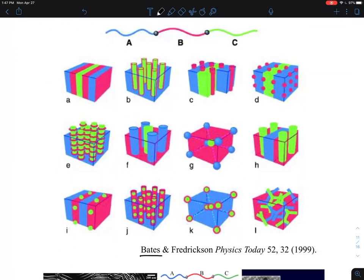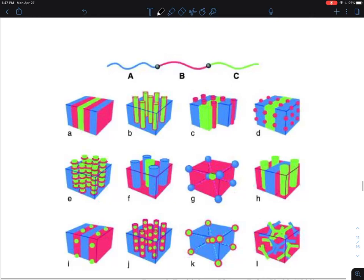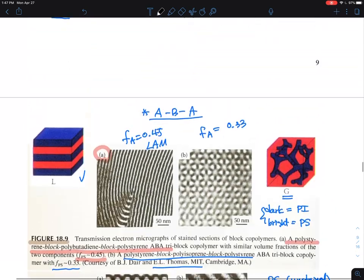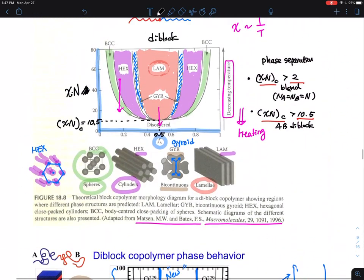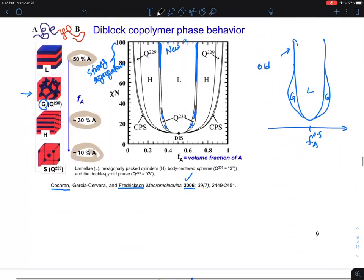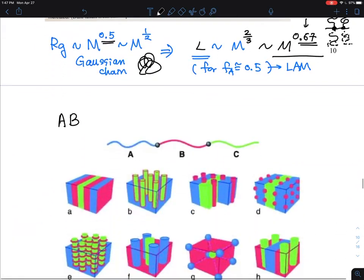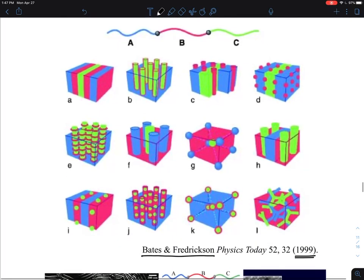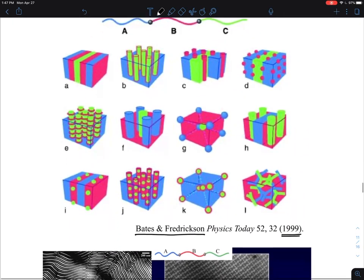This is a review paper by Frank Bates and Glenn Fredrickson, who wrote many versions of review papers in 1999. They talk about A-B diblock copolymer phase diagrams, but they're interested in addressing additional complexity. What if you add a third block, making ABC triblock copolymer? It's a very complicated system, pioneered by the German polymer chemist Raymond Stadler, shown at the bottom.